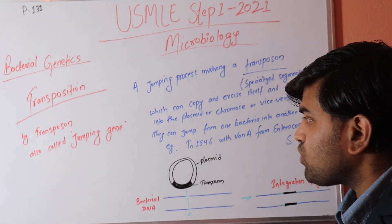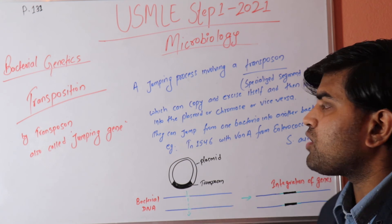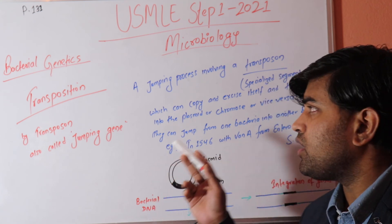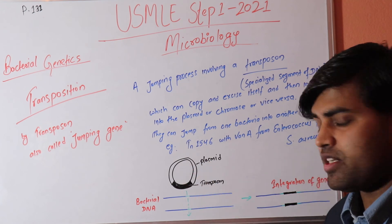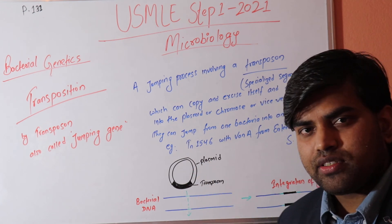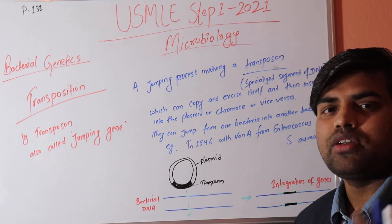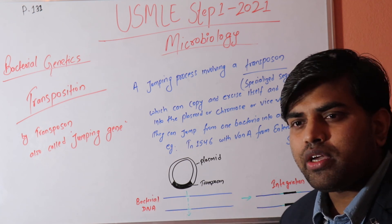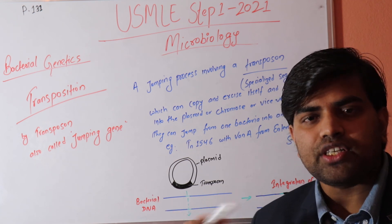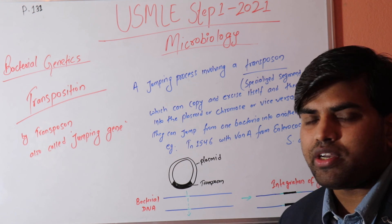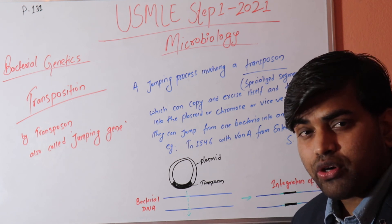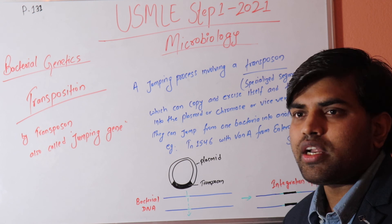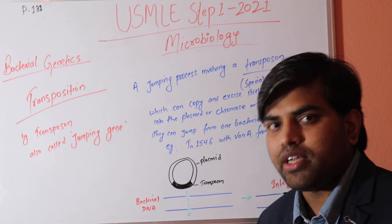So we are done with bacterial genetics. We have talked about transduction, transformation, conjugation, and transposition — all ways of bacterial genetic transfer from one bacteria to another. This is important mainly for understanding drug resistance and other genetic information transfer as well. Thank you.